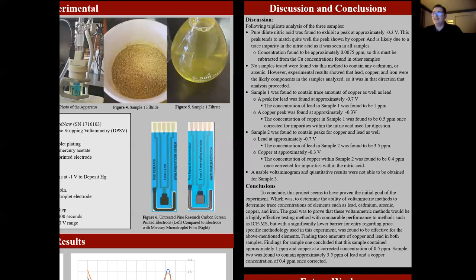Sample one was found to contain trace amounts of copper as well as lead. A peak for lead was found at approximately negative 0.7 volts. The concentration of lead in sample one was found to be approximately 1 ppm. A copper peak was found at approximately 0.3 volts. The concentration of copper in sample one was found to be about 0.5 ppm, once corrected for any impurities within the nitric acid used for digestion.